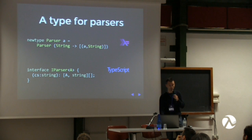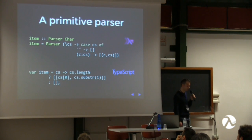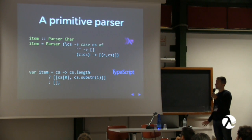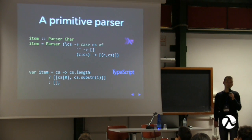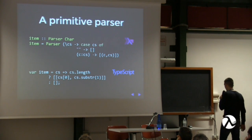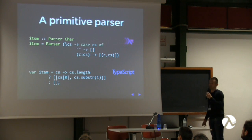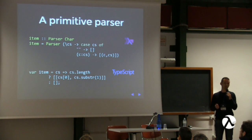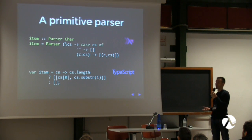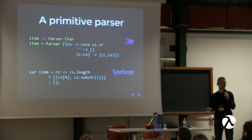This is just the interface of a parser. We can define a primitive parser called 'item'. Item is a parser that can parse a single character from a string. The implementation is pretty simple — you can see examples in both Haskell and TypeScript. Item takes a string and parses a single character from it, whatever that character is.